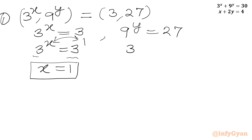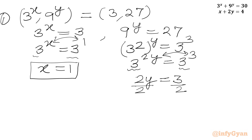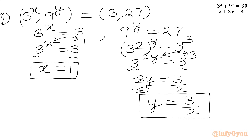For 9^y = 27, we write (3²)^y = 3³, which gives 3^(2y) = 3³. Bases are the same, so we equate exponents: 2y = 3. Dividing both sides by 2, y = 3/2. So our first solution is (x, y) = (1, 3/2).